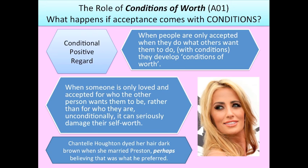As an example, Chantelle Horton married someone called Preston from The Ordinary Boys, and when they got married she dyed her blonde hair completely dark brown — raising the question of whether she was trying to be something Preston wanted her to be rather than what she really is. Perhaps you can think of your own examples: do you know people who've got a new boyfriend or girlfriend and seem to completely change to be what that person wants? When those relationships end, people sometimes say 'I just feel like myself again' — suggesting they were constantly trying to live up to conditions placed on them, which really damages someone's self-worth.